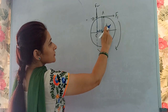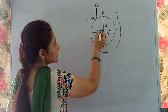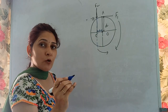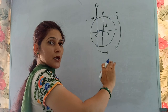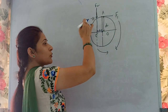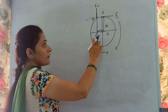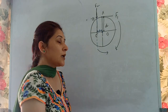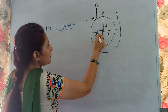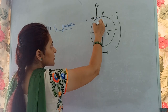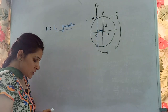From the diagram it is clear that the perpendicular distance for F1 is greater, so a smaller force F1 is needed to create the turning effect. The perpendicular distance for F2 is less, so a greater force F2 is needed to create the same turning effect. Therefore, the magnitude of F2 is greater than F1.